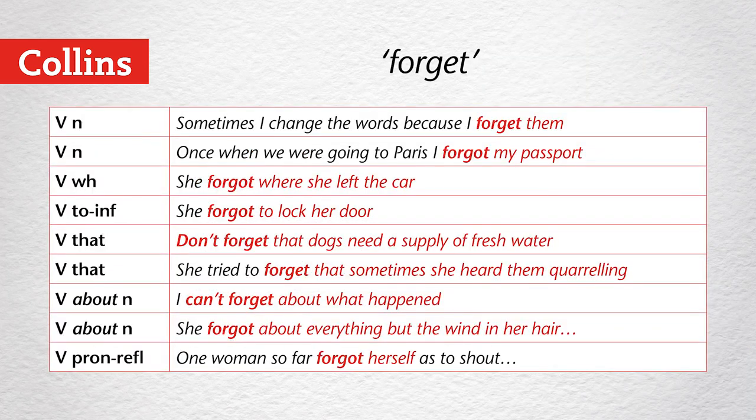Now let's look at some verbs and see all the patterns that those verbs have. The verb forget has a lot of patterns. Straightforward V+N: I forgot them or I forgot my passport. V followed by a WH clause: forgot where she'd left the car. V followed by a to-infinitive: forgot to lock her door.